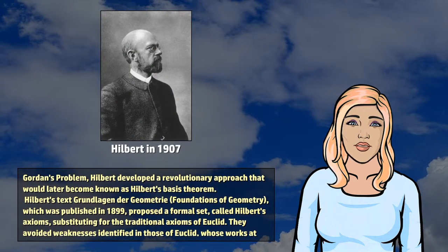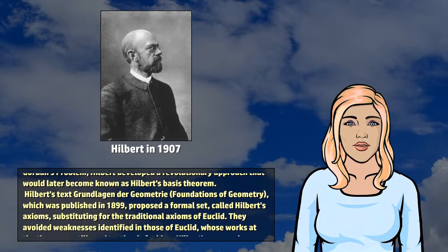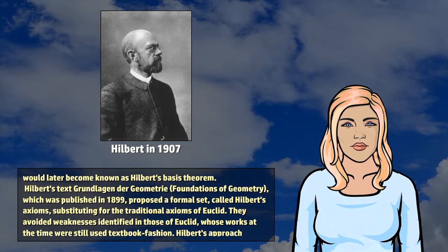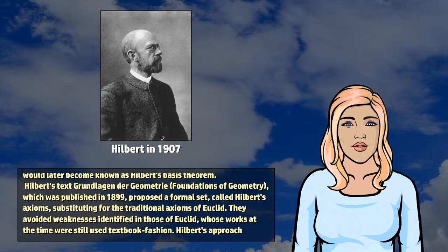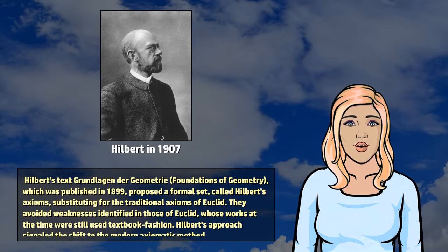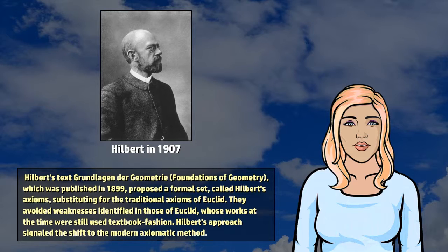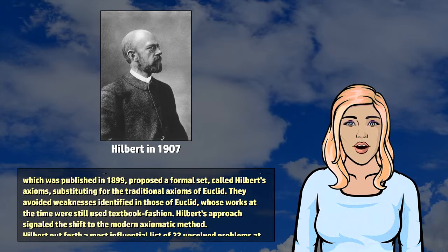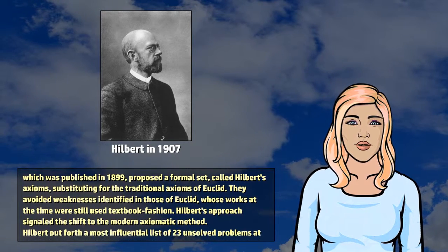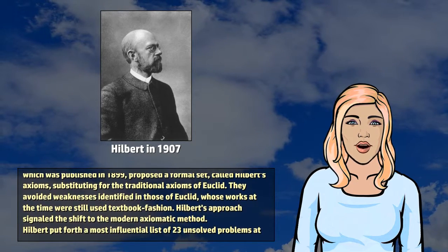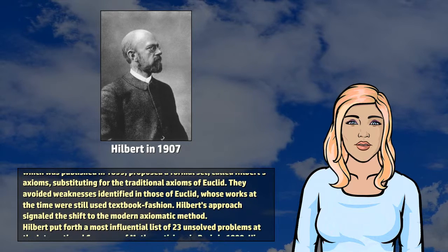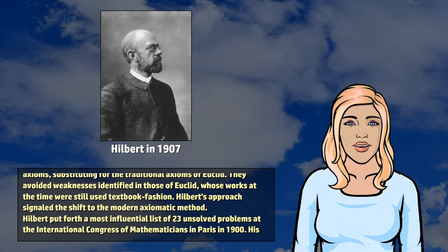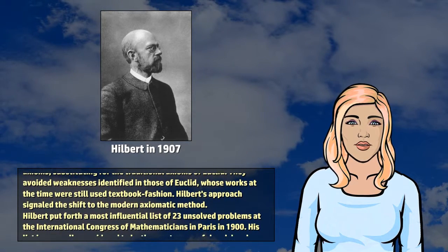Hilbert's text Grundlagen der Geometrie, Foundations of Geometry, which was published in 1899, proposed a formal set, called Hilbert's Axioms, substituting for the traditional axioms of Euclid. They avoided weaknesses identified in those of Euclid, whose works at the time were still used textbook fashion.